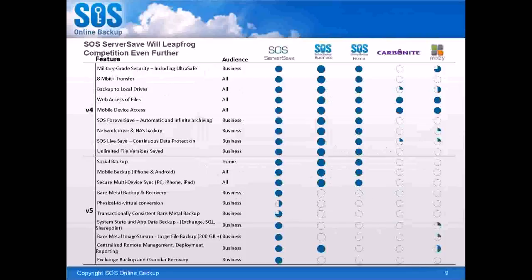Here we have a competitive comparison of the SOS product before ServerSafe and who we were competing against. Previously, the SOS Business File and Folder Program and SOS Home Program competed with the big guys — Carbonite and Mozy — and still beat them on many features, particularly upload speed. Our speed test page shows how much faster our upload time is versus Carbonite and Mozy, because we don't throttle data. We want you to get it into the cloud as quickly as possible.